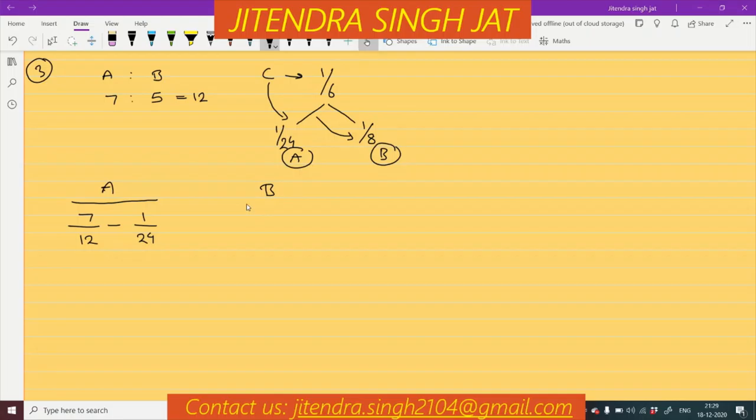Now come for B. B's existing share is 5/12. B is sacrificing 1/8, so whatever B is sacrificing must be subtracted. And C's share is given directly as 1/6.